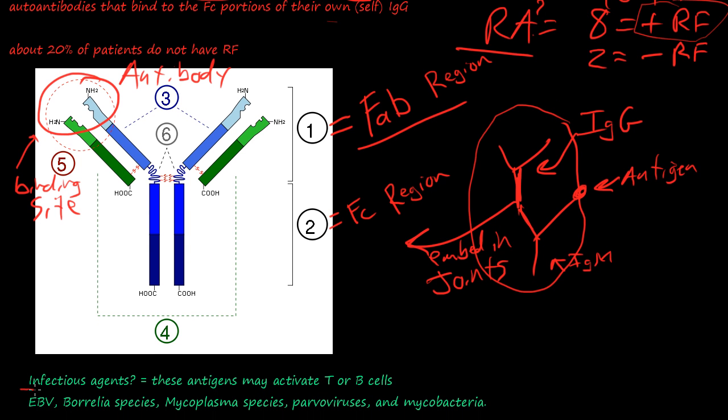One last thing is the infectious agents. There are some theories or some evidence to show that maybe it's an infectious agent that's causing this destruction of rheumatoid arthritis. These antigens may activate T or B cells. Infectious agents that are presumed are EBV, Borrelia species, Mycoplasma species, Parvoviruses, and Mycobacteria.